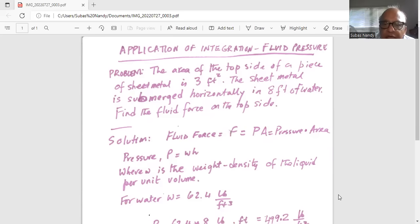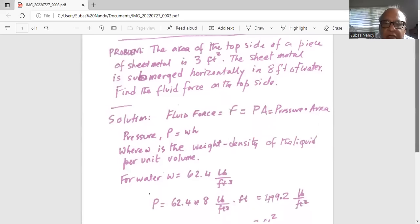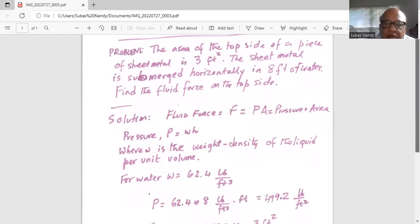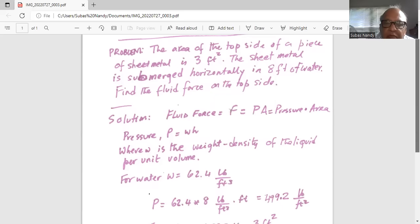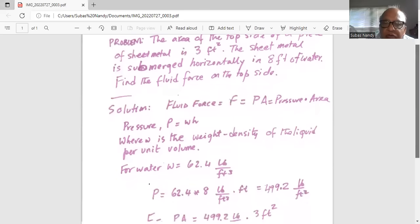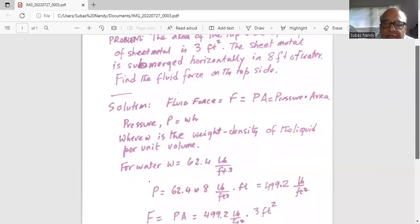Now fluid force is F equal to pressure multiplied by area. Pressure is W times H where W is the weight density of the liquid per unit volume. For water W is 62.4 pounds per feet cubed.